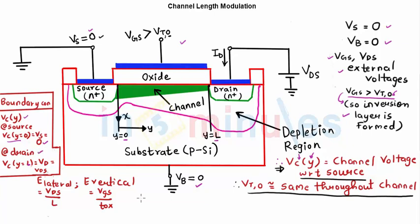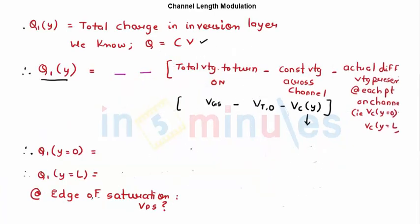There are two electric fields in a MOSFET: the lateral electric field given by VDS divided by channel length, and the vertical one given by VGS divided by oxide thickness. With this background, let's find the total charge in the inversion layer, Q1(Y), for Y=0 and Y=L to see what happens.